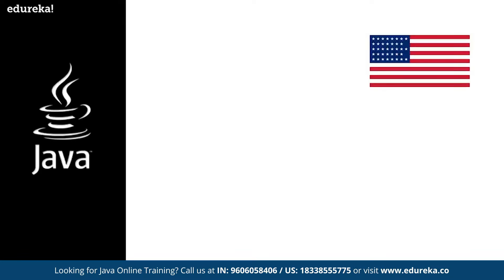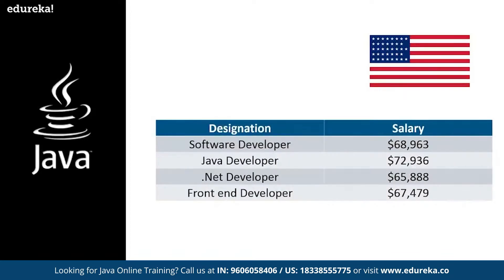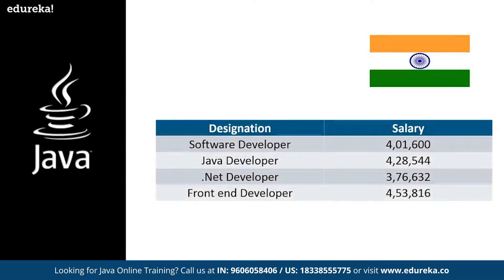Let us discuss some salary trends in USA and India for the leading language developers. In USA, the salaries for software developers per annum are sixty-eight thousand nine hundred and sixty-three dollars, followed by Java developers at seventy-two thousand nine hundred and sixty-three dollars per annum. Similarly, in India, the software developer salary is four lakh one thousand six hundred rupees per annum, and the Java developer salary stands at four lakh twenty-eight thousand five hundred and forty-four rupees for the entry level.